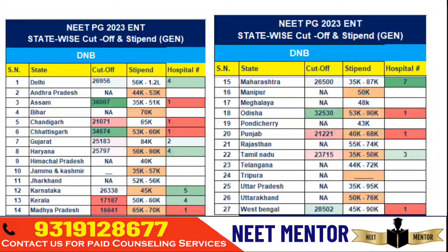You must check reviews, and for all such guidance you can contact us — we have paid guidance for that. The state-wise DNB cutoffs are shown here, so if you have a list of preferred states, you can find out whether you can get DNB at your expected score.